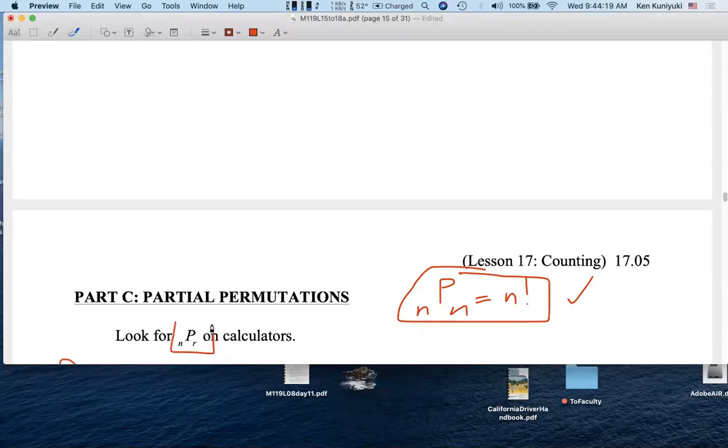Now these correspond to nPr on your calculators. Again, nPn, the number of full permutations of n distinct items, which is n-factorial, that's fair. But these will not be fair, where r is less than n.